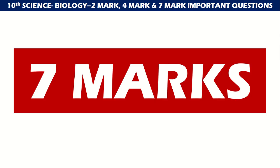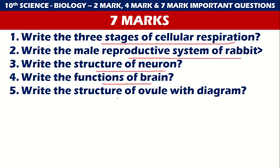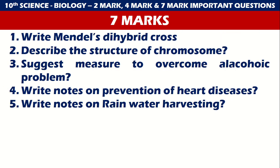Now for 7-mark questions: Write the three stages of cellular respiration. Male reproductive system of rabbit. Structure of neuron. Functions of the brain and structure of ovule with diagram. These are five questions frequently asked in your science examination for the biology part.